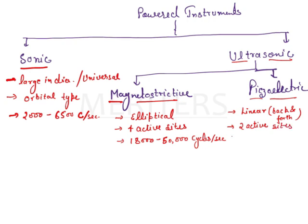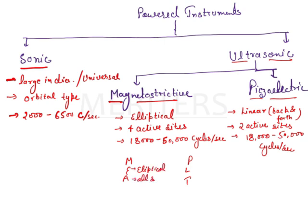Two active sites, and the frequency is the same: 18,000 to 50,000 cycles per second. You can remember this with the mnemonic PLT: M is magnetostrictive — elliptical pattern with all-side movement; P is piezoelectric — L is linear motion with two-side movement.